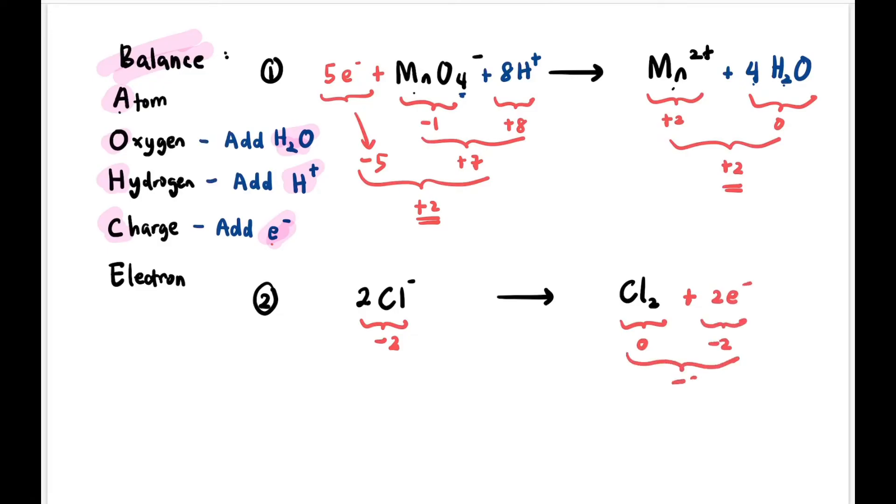Negative 2 on the left side, nothing on the right side. So we add 2 electrons on the right side. Then now we have both sides with -2 charge. So charge is balanced.